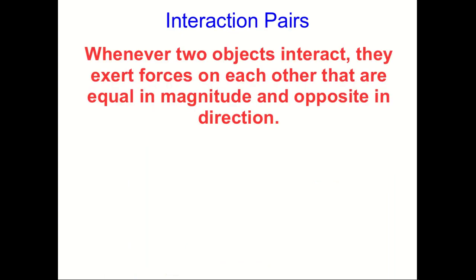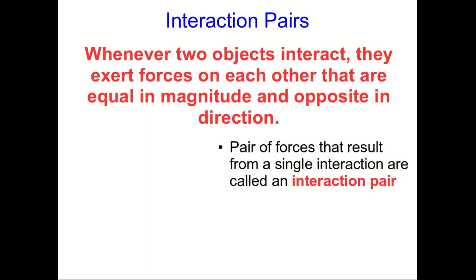This is a law. Whenever two objects interact, they exert forces on each other that are equal in magnitude and opposite in direction. The pair of forces that you get out of a single interaction are called an interaction pair.